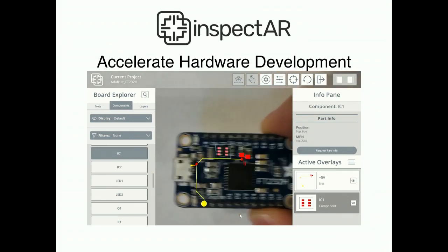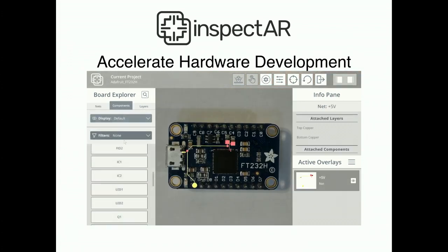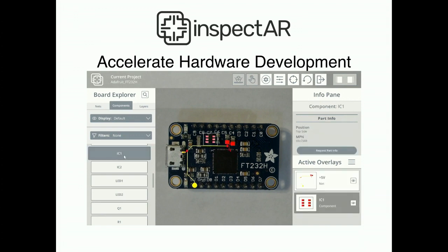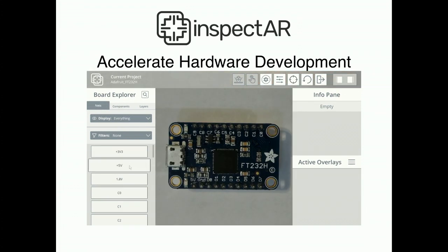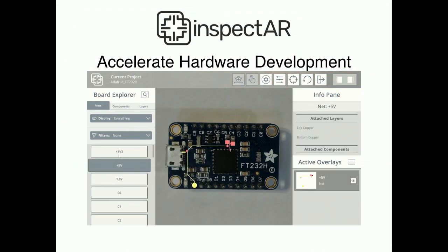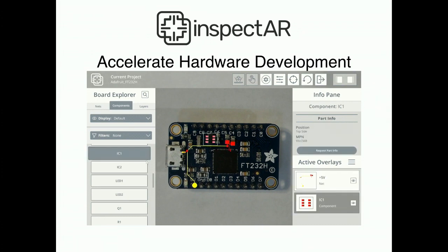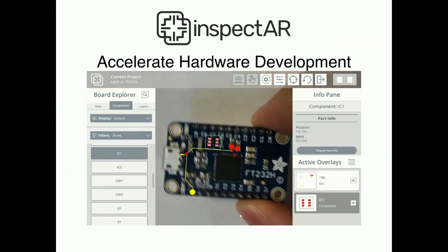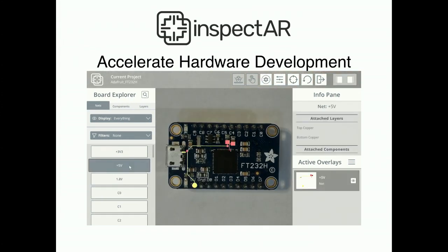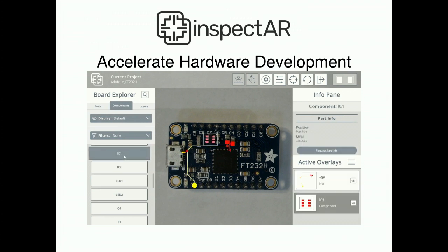You can pretty much highlight any net, layer, or component on the board. You get all the metadata in one place, and now you can share that same information with other engineers without having to send a bunch of files from your EDA tool and expect everybody to know how to use Altium, Orcad, KiCad, Eagle, or whatever. You can just more intuitively ask: where does this signal go, what's that part, what's pin 5, where does pin 5 go — thinking more intuitively and less tool-based.